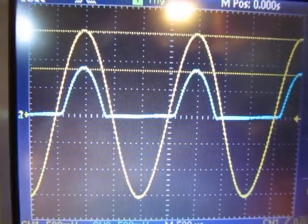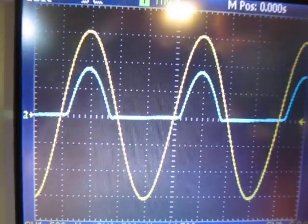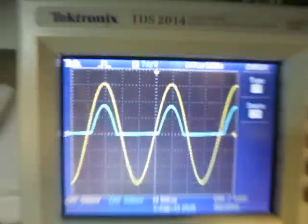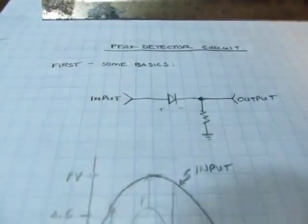So that's that diode drop. So that's how this simple circuit would work. Now, how do we turn that into a peak detector?